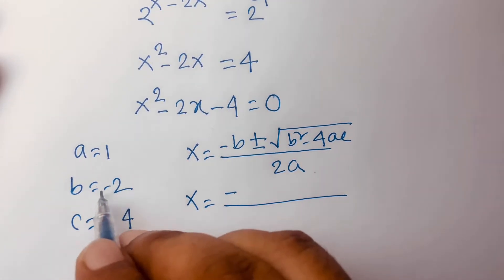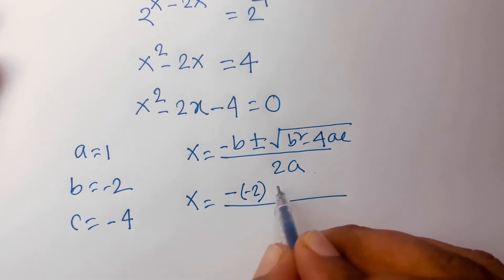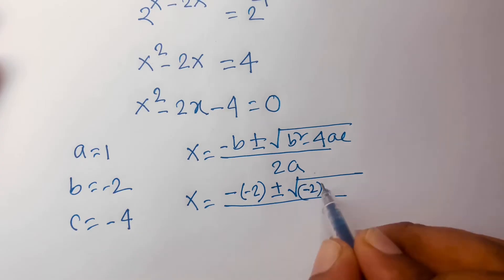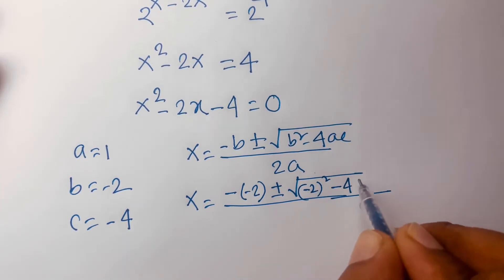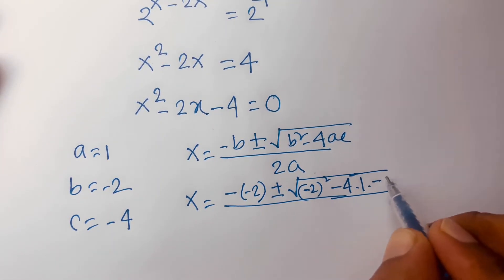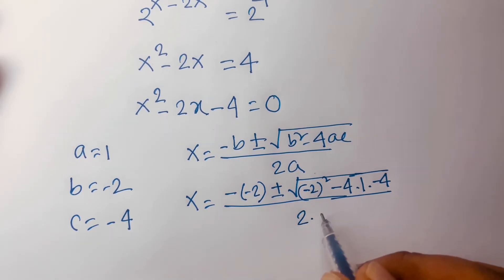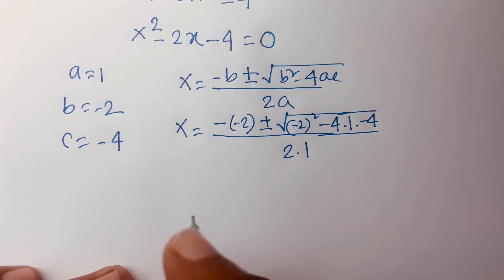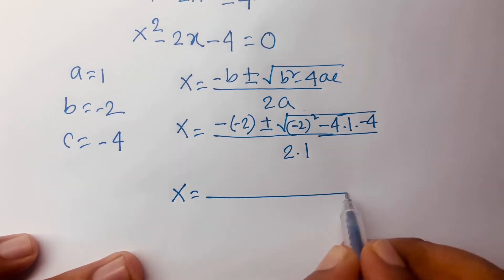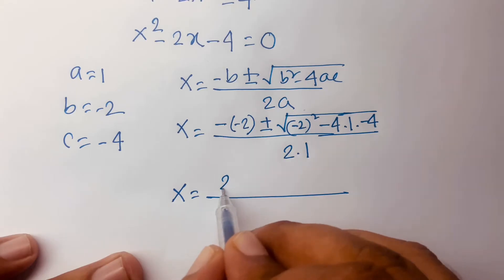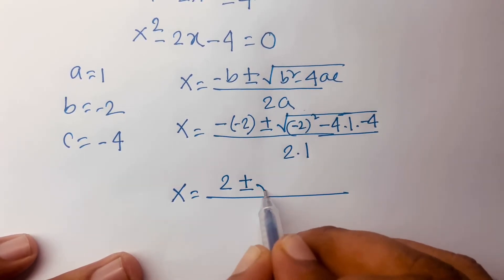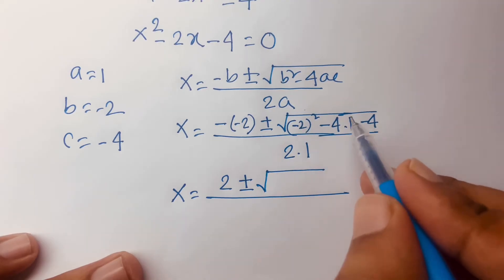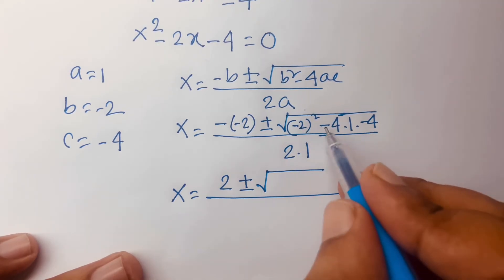According to these rules, x is equal to minus b — here b is minus 2 — plus or minus square root of b squared, so minus 2 whole squared, minus 4ac where a is 1 and c is minus 4, over 2a where a is 1. This becomes x is equal to 2 plus or minus square root of 4 plus 16.